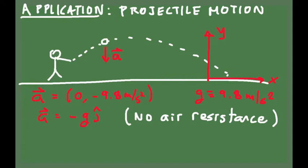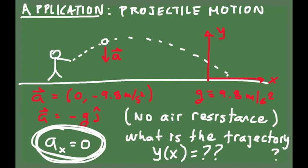This assumes there is no air resistance. A piece of paper dropped in the air would obviously not accelerate at 9.8 meters per second squared because the effect of air could not be neglected in that case. Very important to remember for projectile motion is that the acceleration in the x direction is 0, which simplifies the solution of the problem.